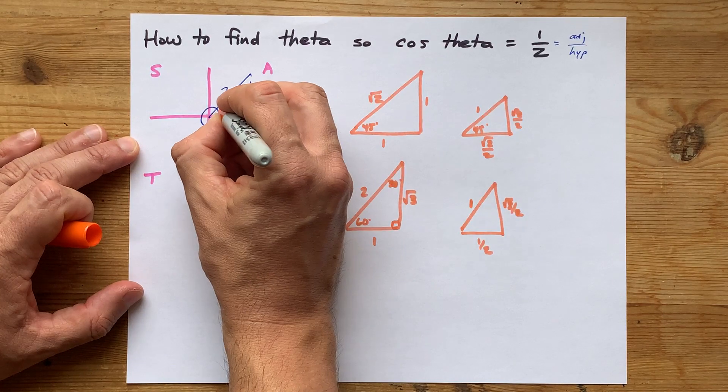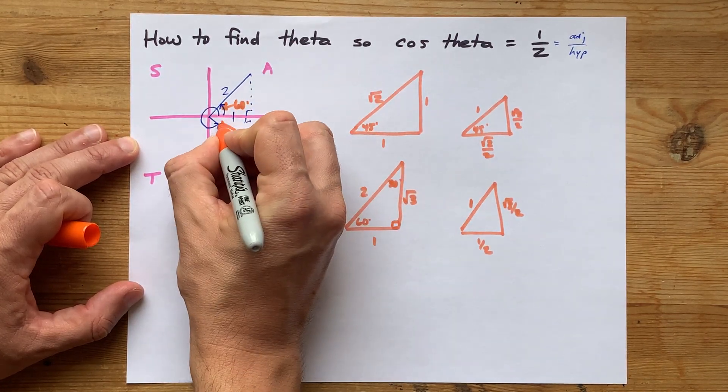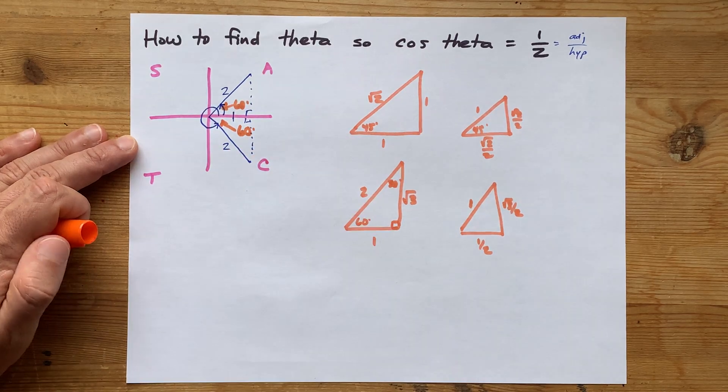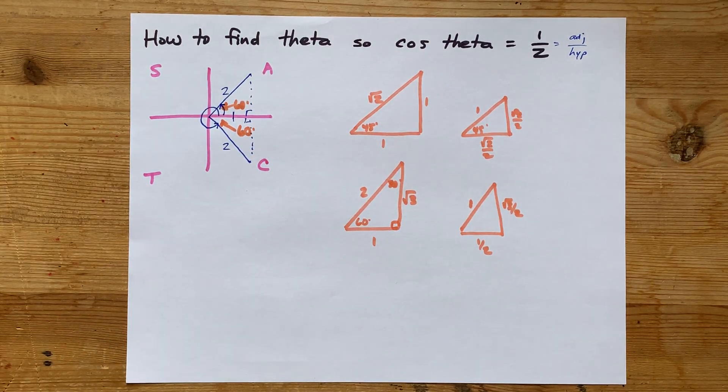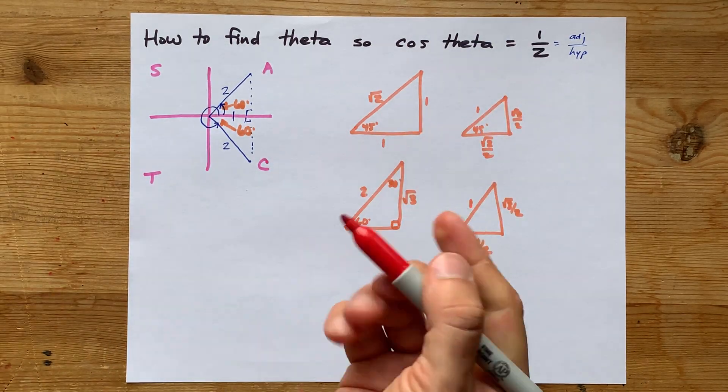What that means is that this here is 60 degrees, and this here is also 60 degrees. So the values of theta that satisfy this equation are...